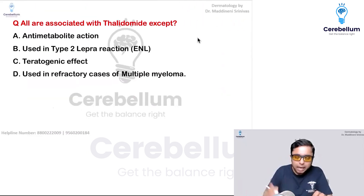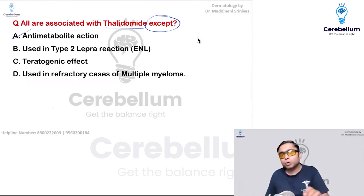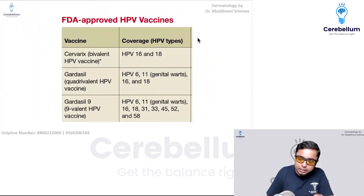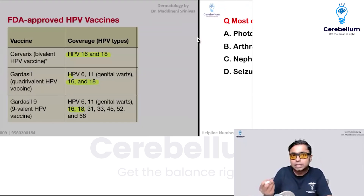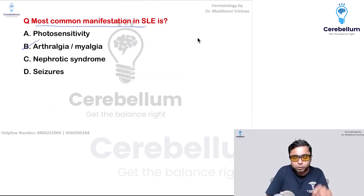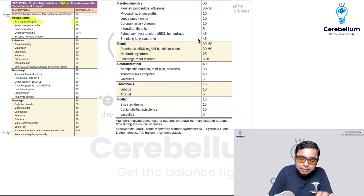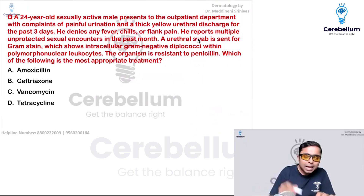Thalidomide — the exception is that it does not have an anti-metabolite action, so the answer is option A. Regarding HPV: the answer is 16 and 18, since all vaccines cover strains 16 and 18 because they are associated with high-risk cervical cancer. The most common manifestation in systemic lupus erythematosus — taken from Harrison — is arthralgia and myalgia, which are musculoskeletal manifestations. So the answer is option B.